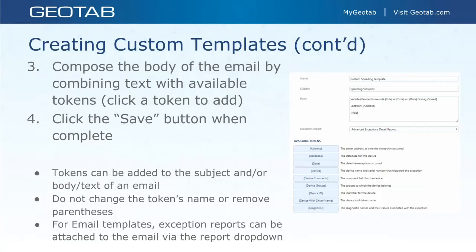You can also include location, which inserts the address, and a map token — a cool feature that includes a screenshot of the map showing exactly where the vehicle was when the exception was generated. Tokens can be added to the subject or body text; don't change the token's name or remove parentheses. For email templates, exception reports can be attached to the email from a dropdown list, including any custom exception reports you've added to your database. Make sure you hit save when done.